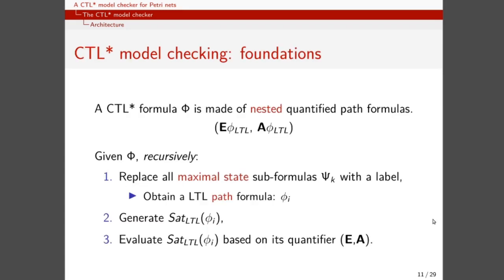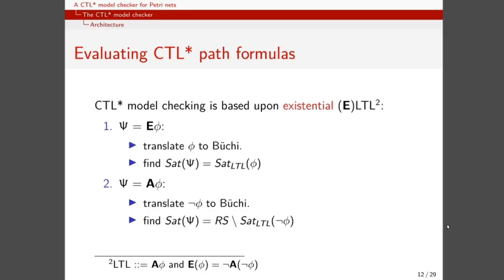This example shows the foundation of our CTL-STAR model checking approach, which is built around nested quantified path formulas. Now, when given an arbitrary CTL-STAR formula phi, we recursively replace all maximal proper state subformulas Psi1 with a label, and we obtain an LTL path formula phi1 for which we can generate the sat set, and then we can evaluate that sat set based on its prefixing quantifier, which can be exist or always.